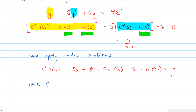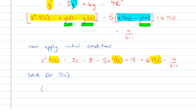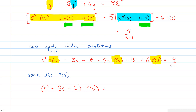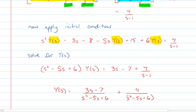Now we're going to solve for Y(s) by factoring it out. There are Y(s) terms in multiple places, so we pull out the factor s squared minus 5s plus 6 onto capital Y(s), and move all other terms to the other side to get 3s minus 7 plus 4 over s minus 1. Then Y(s) equals 3s minus 7 over s squared minus 5s plus 6, plus 4 over (s squared minus 5s plus 6) times (s minus 1).